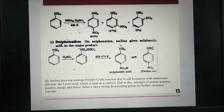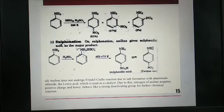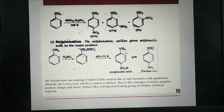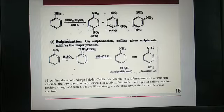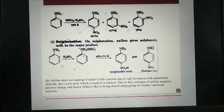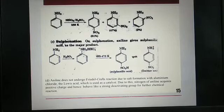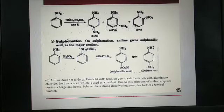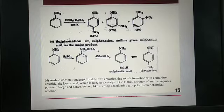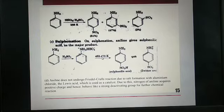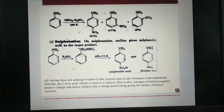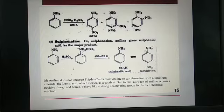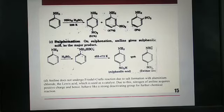On sulfonation, aniline gives sulfanilic acid. Sulfanilic acid is C6H5NH2SO3H. This is aniline on reaction with H2SO4. It goes to NH3+ HSO4- and at 453 to 473 Kelvin, it gives sulfanilic acid. And it is the zwitterion in H3+ SO3-.